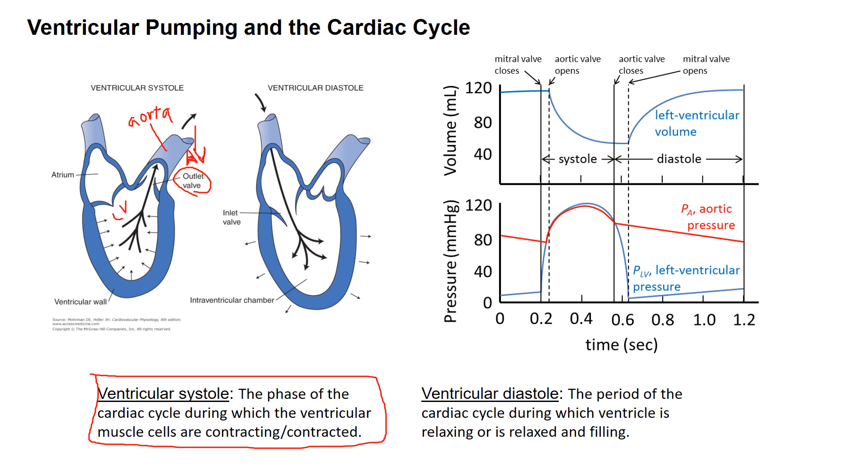The other part of the cycle is called diastole. Ventricular diastole is formally the period of the cardiac cycle during which the ventricle is relaxing or is relaxed and filling. During diastole, the pressure becomes low enough for the mitral valve in the left heart to open and for the ventricle to fill.